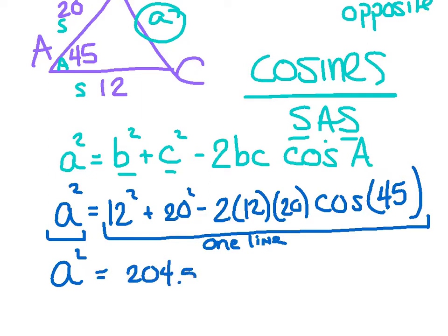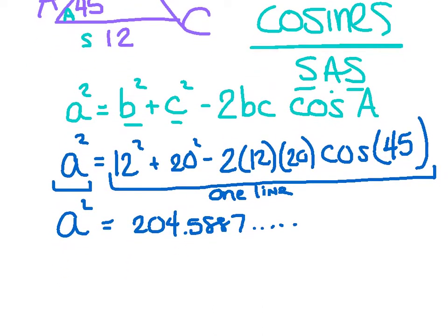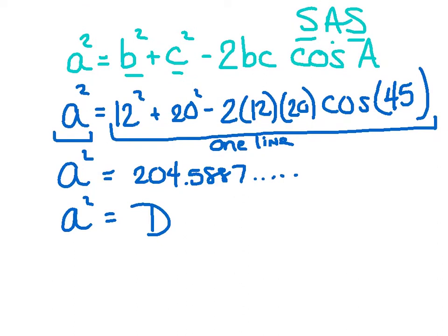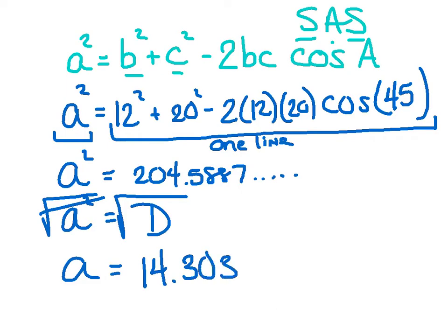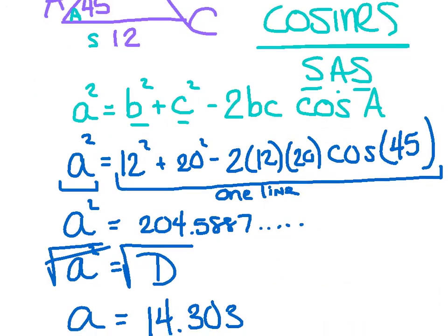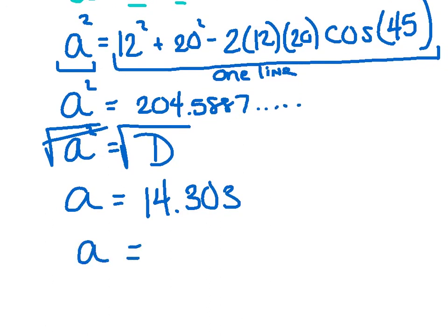I got 204.5887, and that didn't get me A — that got me A squared. So I store this into alpha D, and to get rid of the square I take the square root of both sides. Square root this side, square root this side — those cancel. A equals the square root of that number, which is 14.303. And it said to the nearest integer, so side A equals 14.